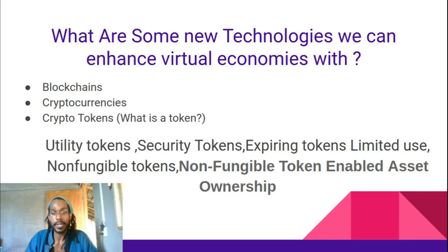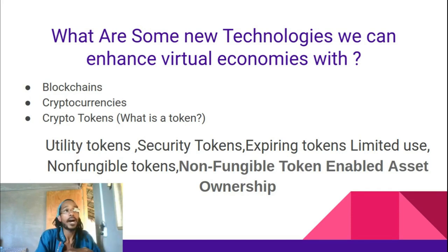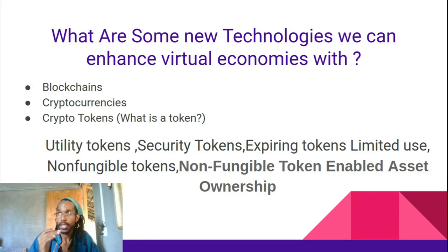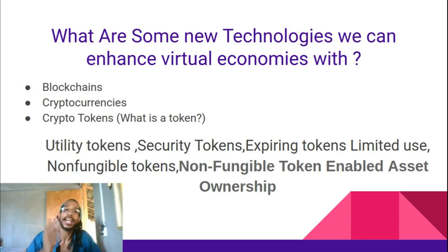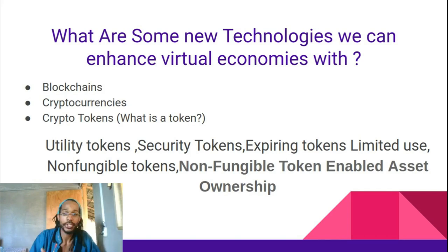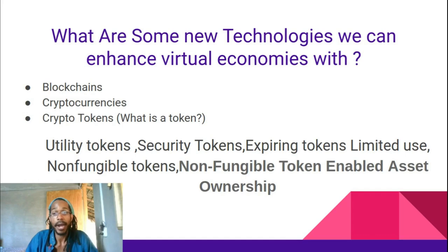Security tokens represent ownership of something in the real world — a fraction of an Apple stock or a fraction of real estate, because you can tokenize assets. You can tokenize a house, a stock. If you can't afford a whole Amazon stock or Nike stock, you can tokenize it, create a security token, divide it, and have fractions of that security. Expiring tokens are tokens that expire after a while, so you're incentivized to utilize them within a certain time period; otherwise they become obsolete — limited use, so the tokens get burned.